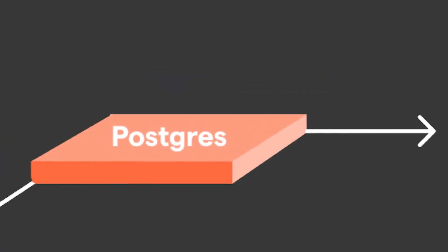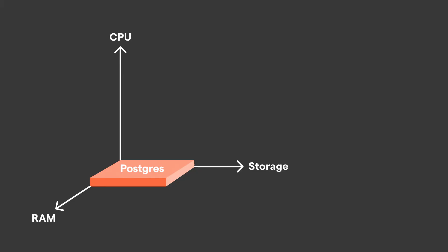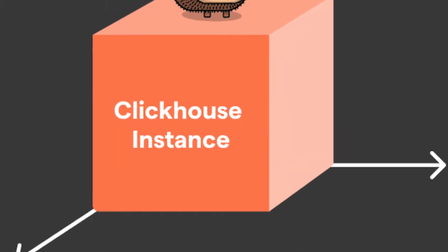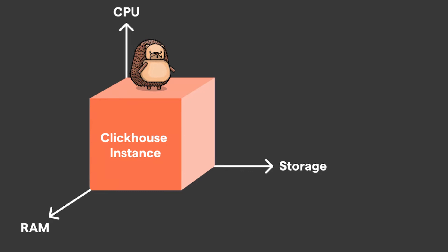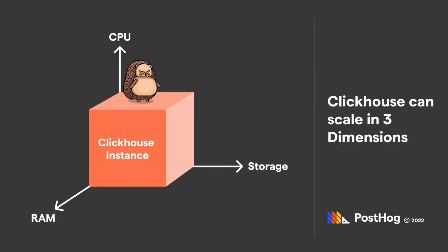The first big difference: ClickHouse scales better than Postgres. When evaluating infrastructure resources, we typically think about CPUs, RAM, and storage. For Postgres, RAM and storage matter, but CPU has limited benefit — because Postgres is primarily a single-process product. Meanwhile, ClickHouse is optimizing data in parallel. You can scale the power of your ClickHouse instance by improving any of the dimensions, including CPU.